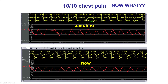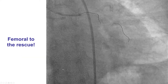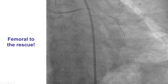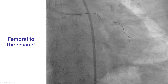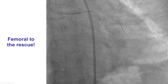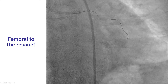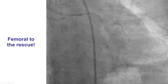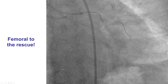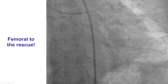The patient had significant ST-segment depression and continued to have significant chest discomfort, but fortunately her pressure was being maintained. We decided that we were not going to be able to deliver through the radial axis, and that is why we obtained femoral access using an 8 French system.